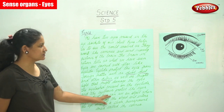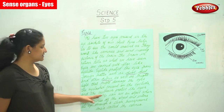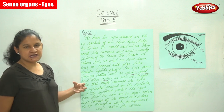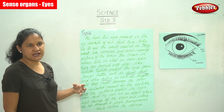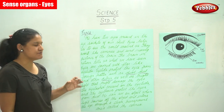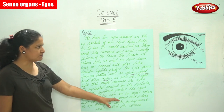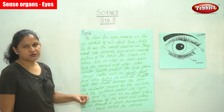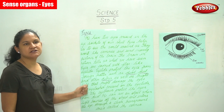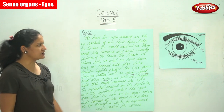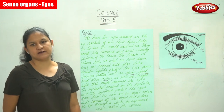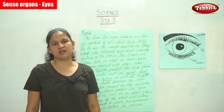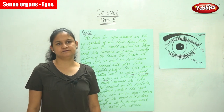We can see an object when light bounces off the object and enters the eye through a clear, transparent area called the cornea. This is about the structure of the eye.